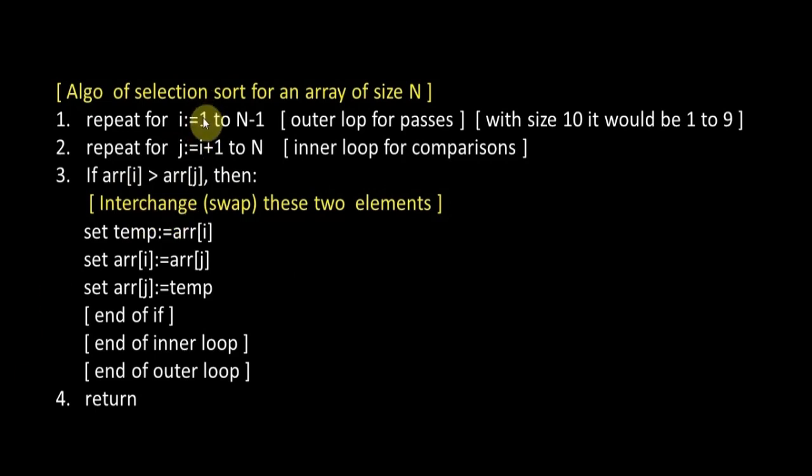But in the next pass when the value of i was 2, the initial value of j was 3. So arr[2] was compared with arr[3], arr[4], and so on. What we are leaving out is the first element, arr[1]. So in each successive pass, we will be leaving an element from the top.